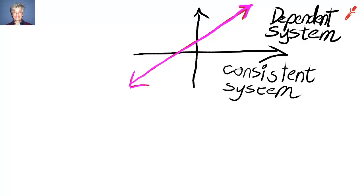Okay, so how many solutions are there? Remember, solutions are where the two lines cross. There are an infinite number of solutions because these two lines touch everywhere for all infinity.